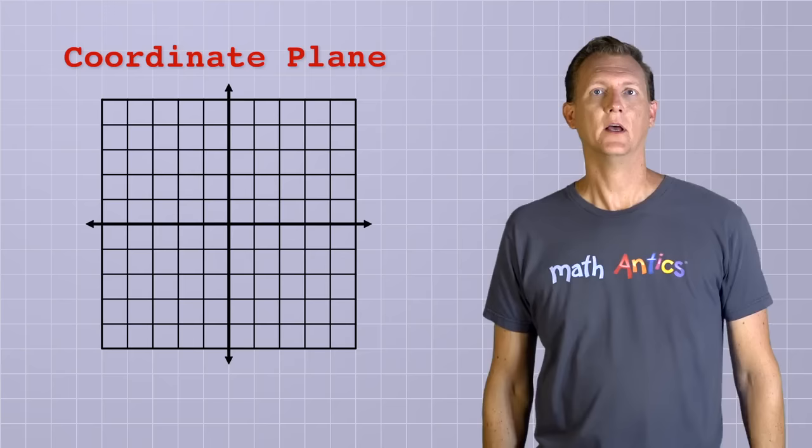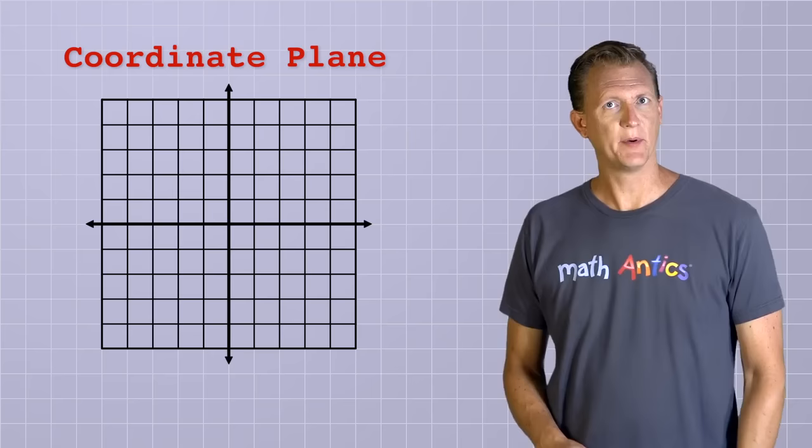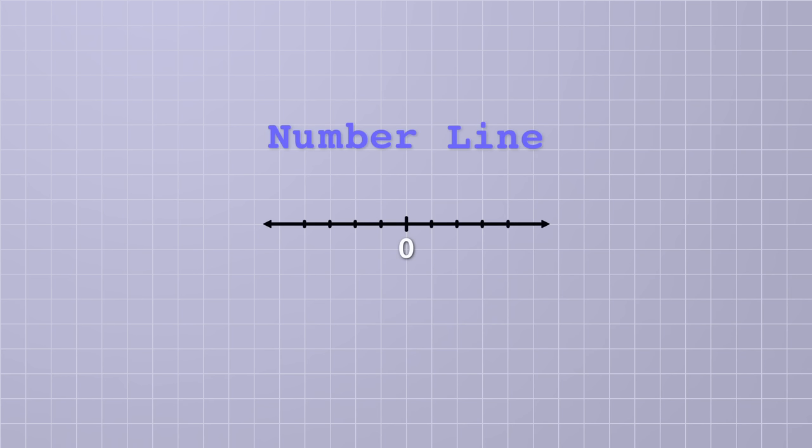In fact, the focus of our lesson today actually looks a bit like a window, and it's called the coordinate plane. The coordinate plane is the platform, or stage, that our graphing will take place on. But to understand how it works, we first need to start with its closest relative, the number line.